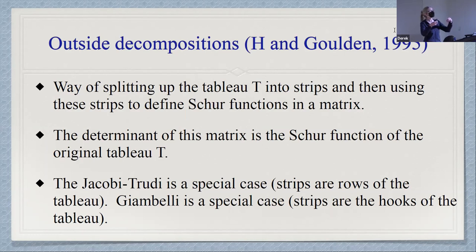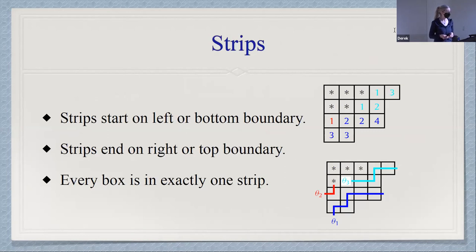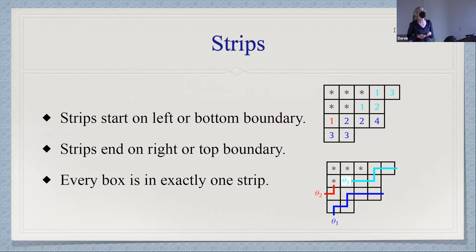The outside decompositions come from a way of splitting the tableau into strips. It comes under other names: border strip decompositions, or rim ribbon decompositions. You split the tableau into strips where everything has to belong to a strip. The strips have to start on the left or bottom boundary and end on the right or top boundary. If you have a skew tableau, the boundary really does include the part that you've removed — so that becomes part of my top boundary.